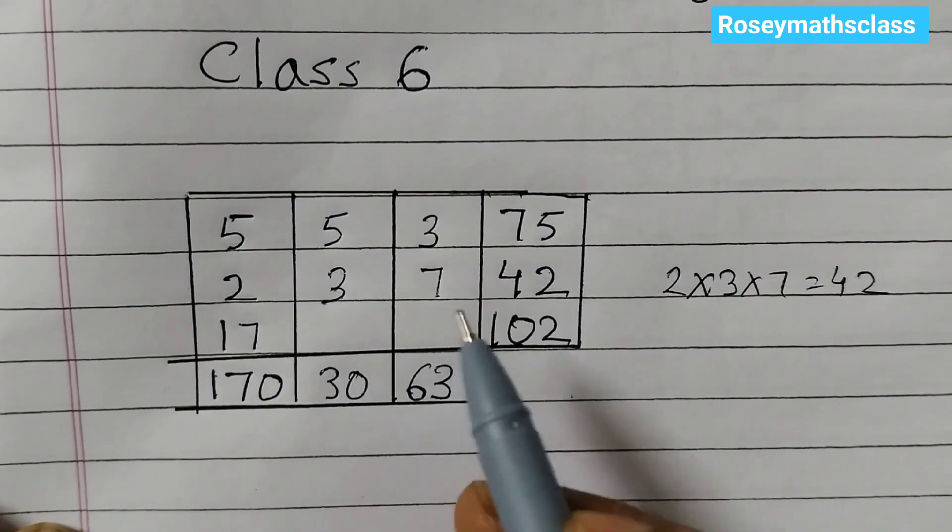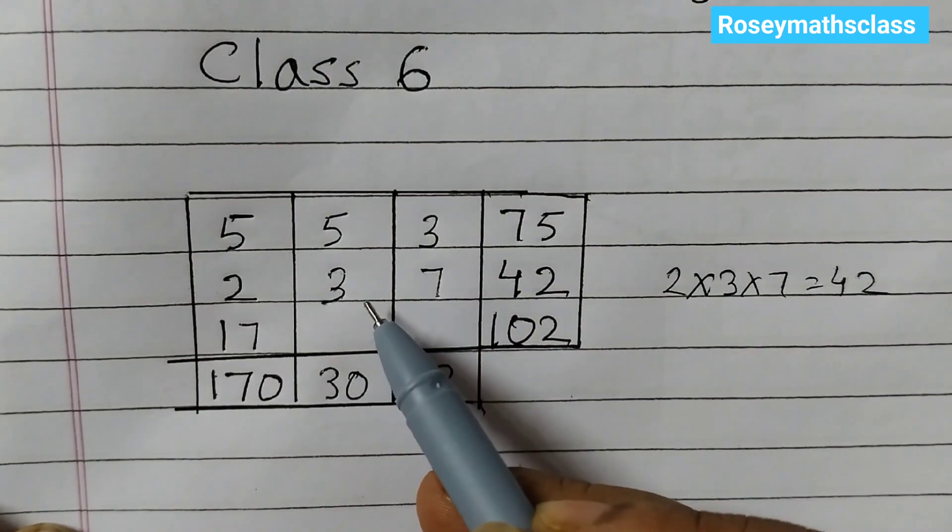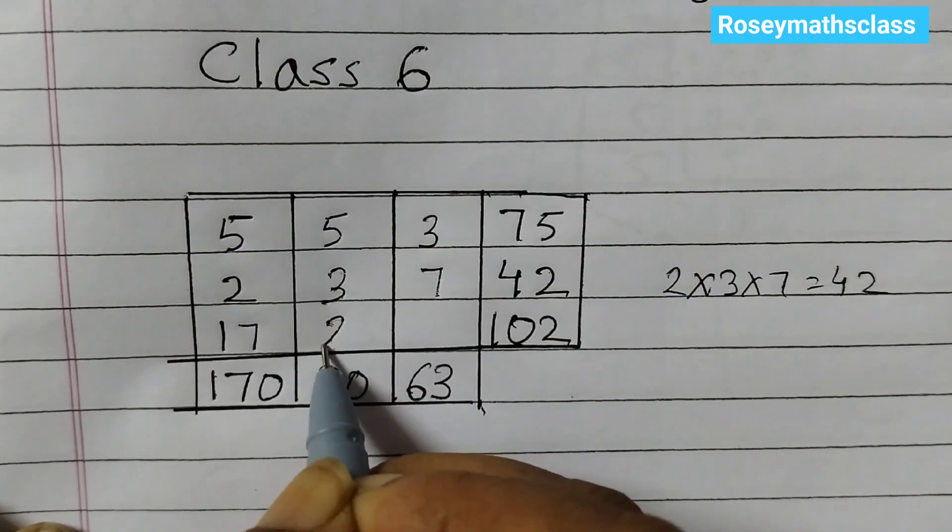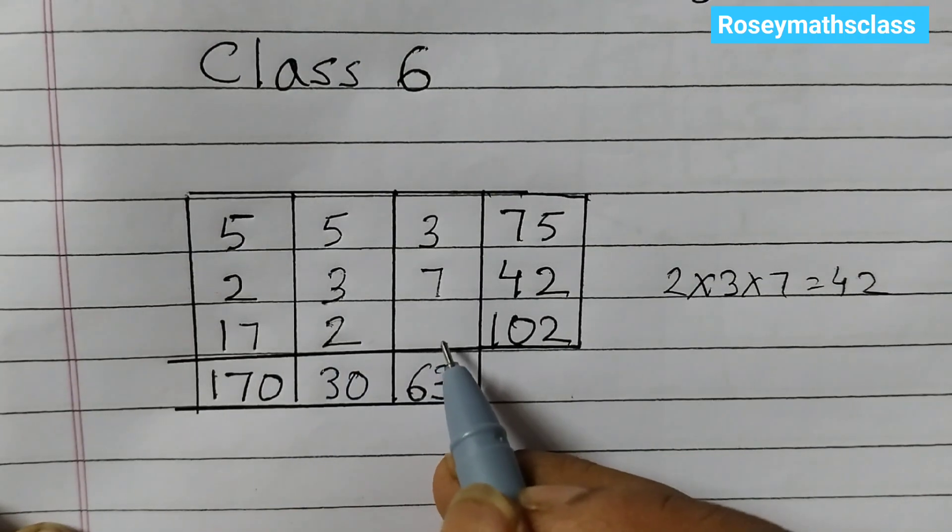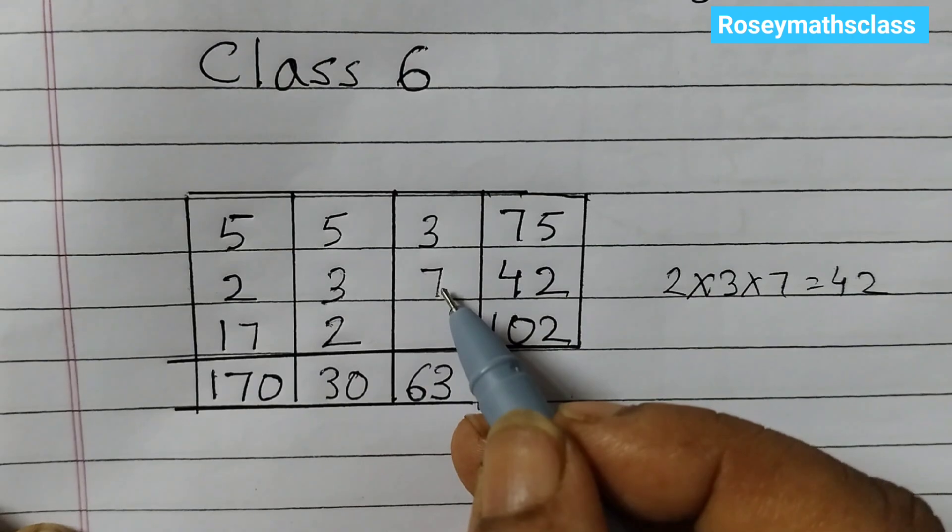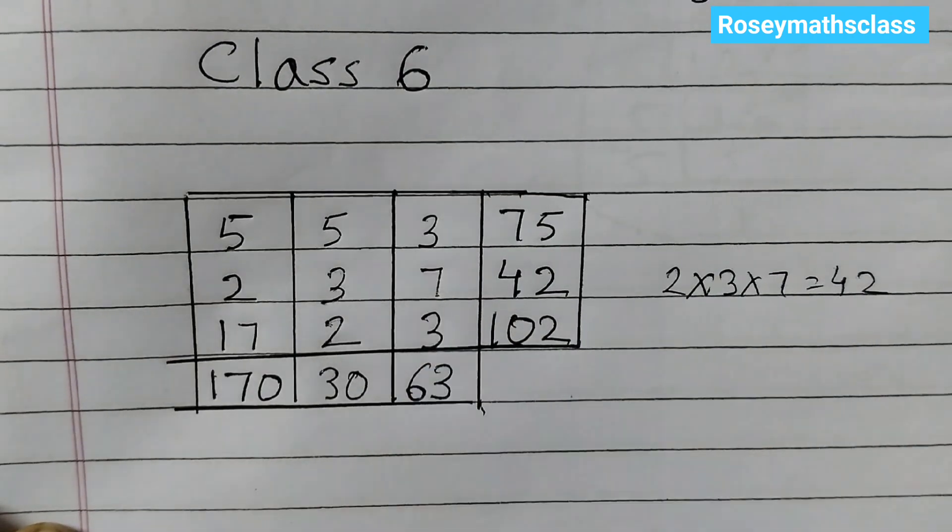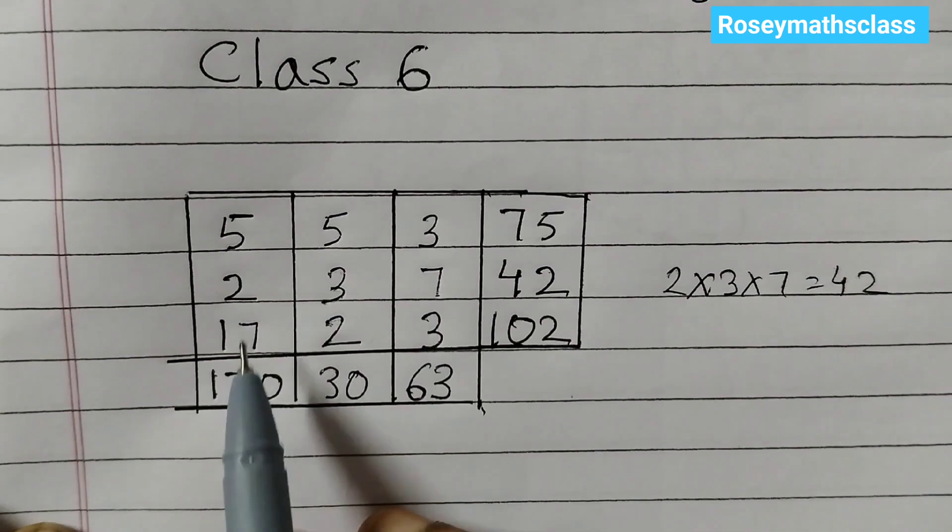Now we need to fill up this place, so 5 times 3 is 15, 15 times 2 is 30. And now one blank left, so here it's 3 times 7 is 21, 21 times 3 is 63.